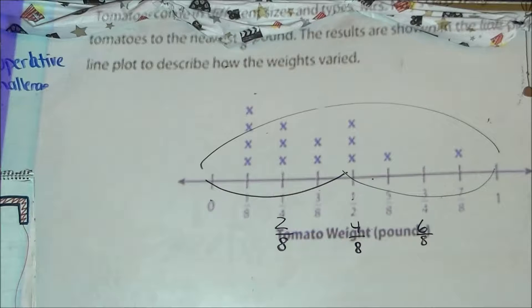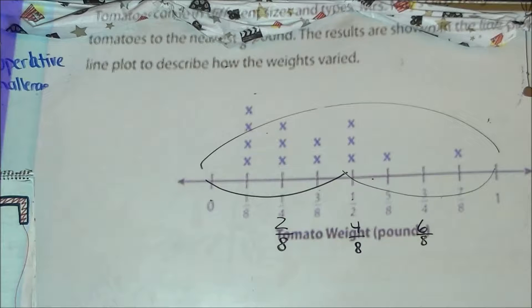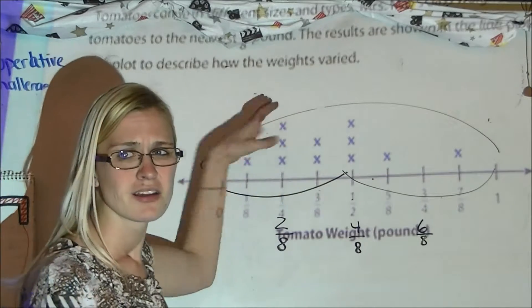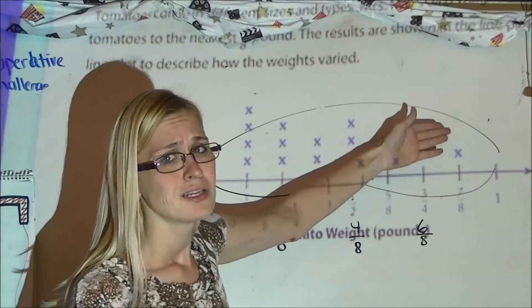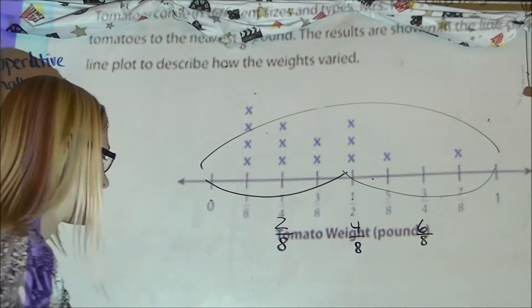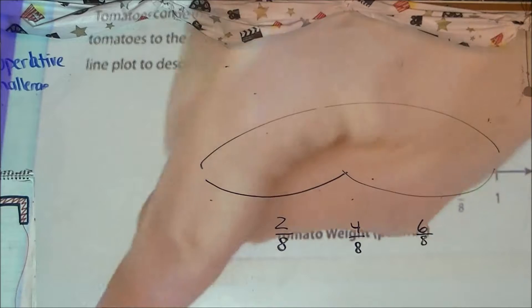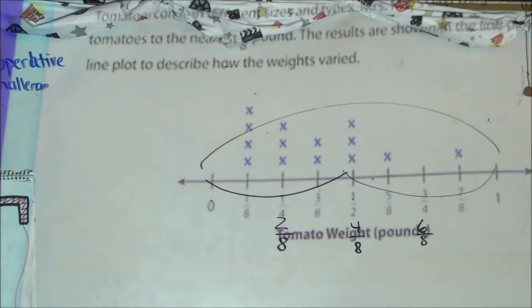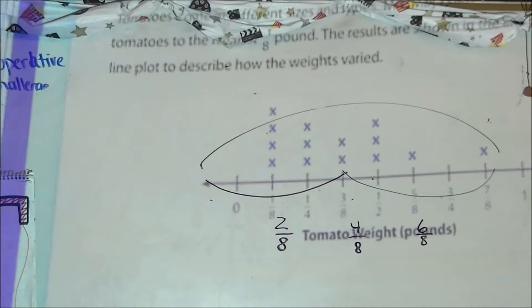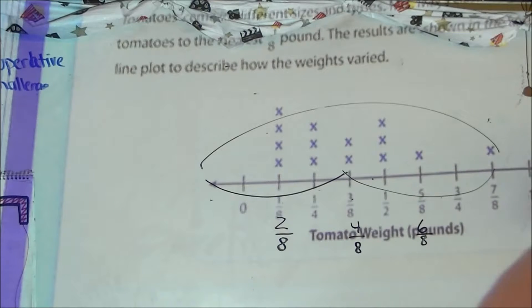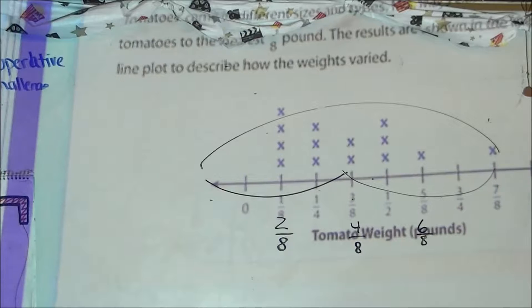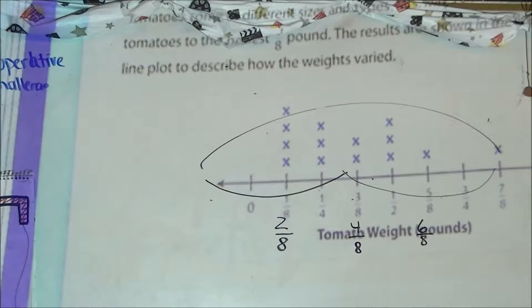Looking at letter D: are there any tomatoes whose weight is very different from the rest? If so, what does it weigh? The concentration of tomatoes is between 0 and 1/2 pound — most of them are right in there. However, there's this odd one out. It is very different from the rest — it's a little bit heavier. We decided most are on the lighter side, but that 7/8 is on the heavier side. So it is different from the rest, and it weighs 7/8.